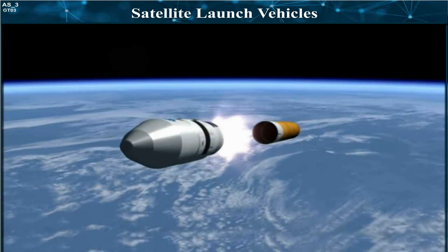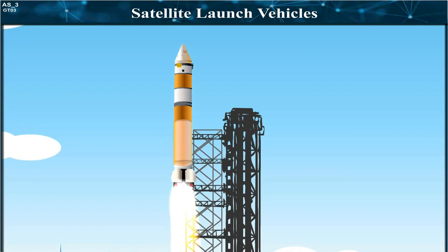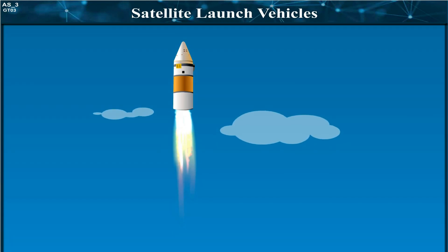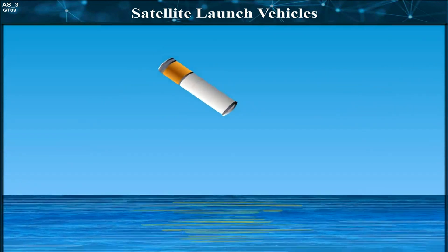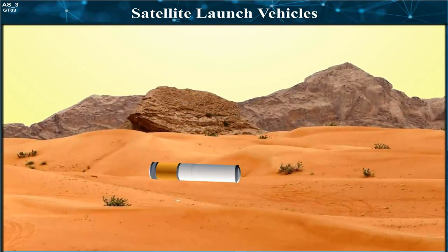For example, consider a launch vehicle having two stages. For launching the vehicle, the fuel and engine in the first stage are used. This imparts a specific velocity to the vehicle and takes it to a certain height. Once the fuel in this first stage is exhausted, the empty fuel tank and the engine are detached from the main body of the vehicle and fall either into a sea or on an unpopulated land.